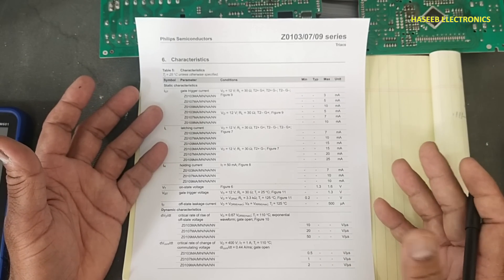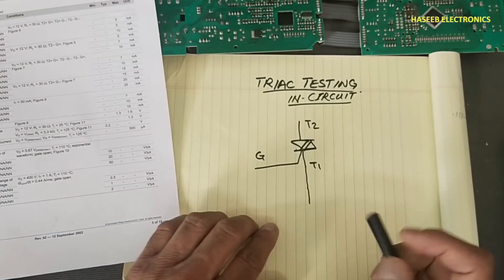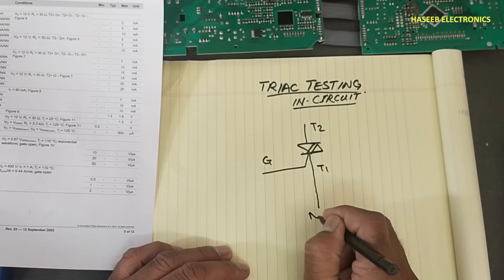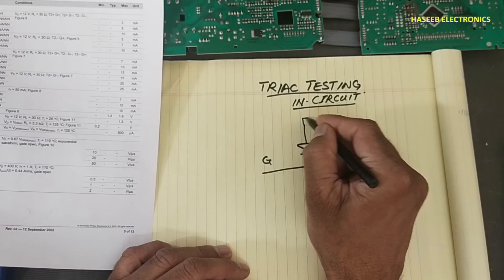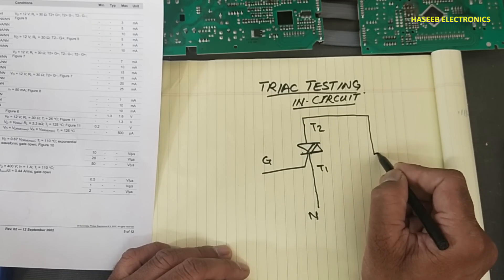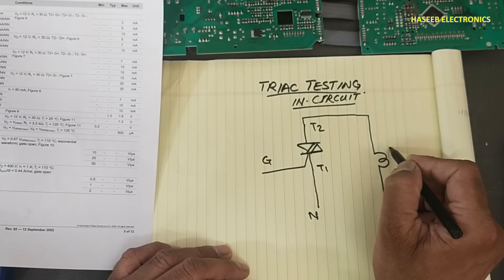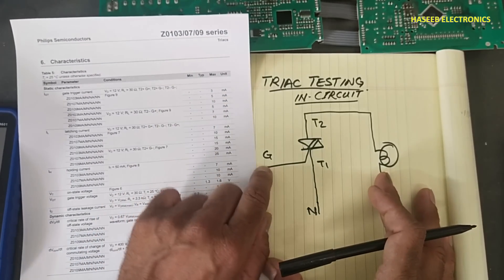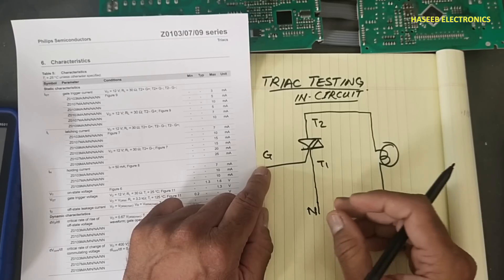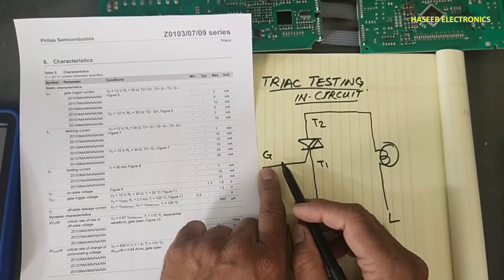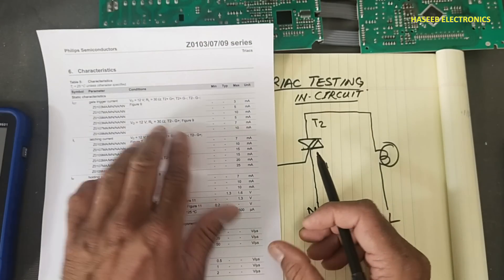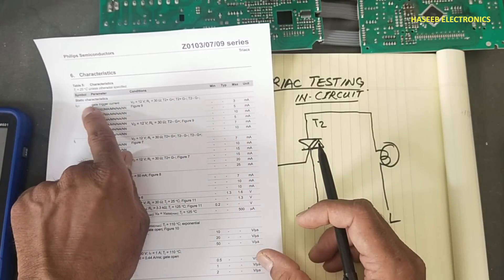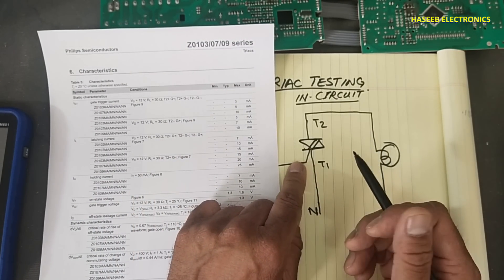A triac is used to switch AC line voltage, whether 110V or 220V. Terminal 1 is connected to common neutral, and we connect any load between line and neutral. A triac is a gate-triggered component. It works like a relay - we apply trigger current at the gate.